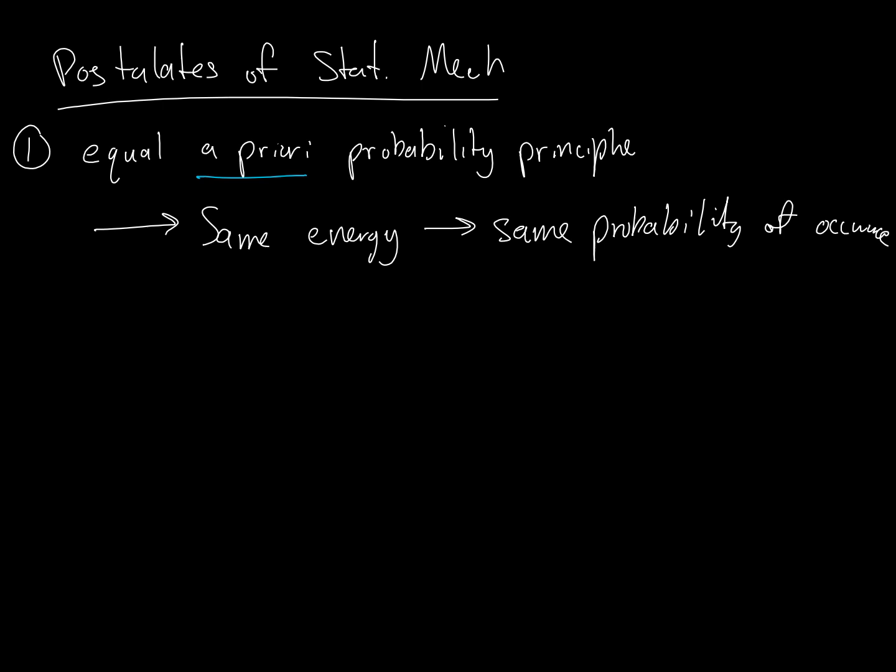This gives us a way to bias against states that are extremely improbable. Basically, if you have two microstates with the same energy, they have the same level of occurrence. And number two, we have what we call the ergodic hypothesis. Has anyone heard the term ergodic or ergodicity before?